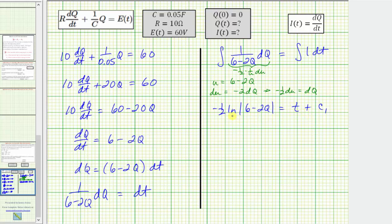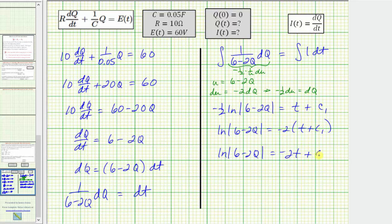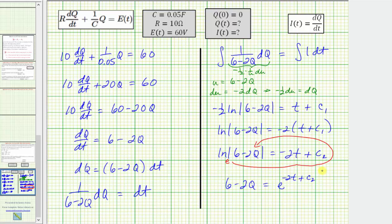Multiplying both sides by −2 gives ln|6 − 2Q| = −2t + C₂, where C₂ = −2C₁. Converting from logarithmic to exponential form (natural log is base e), we get e^(−2t + C₂) = 6 − 2Q, so 6 − 2Q = e^(−2t + C₂).